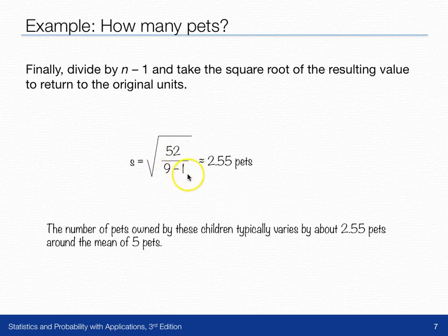So taking the square root of 52 divided by 9 minus 1 gives us about 2.55 pets. Now I know you can't have 0.55 of a pet—this is a typical difference from the mean.